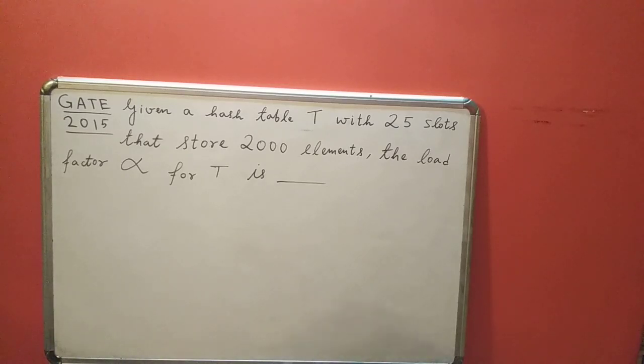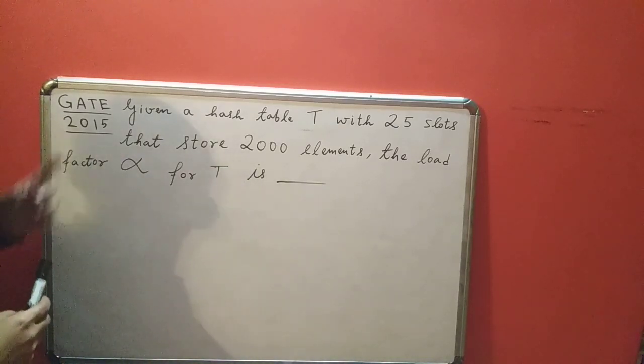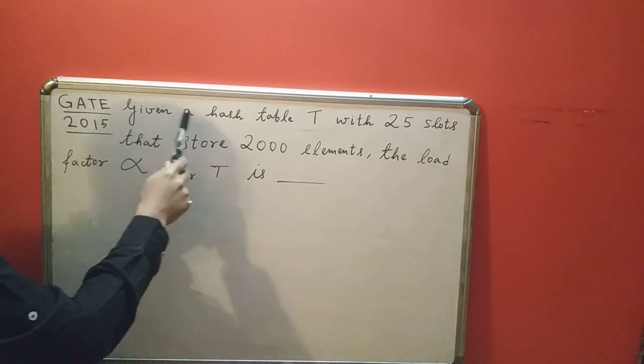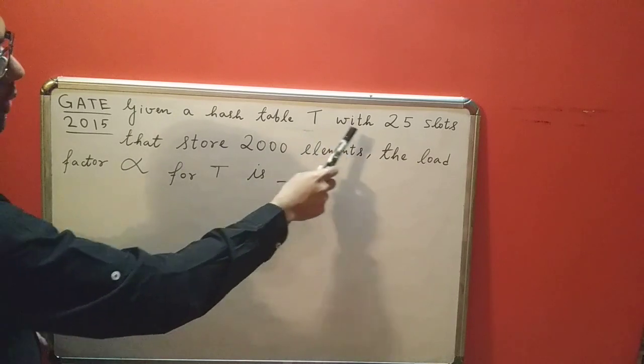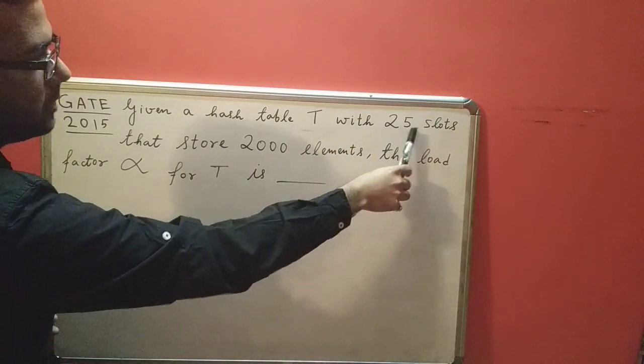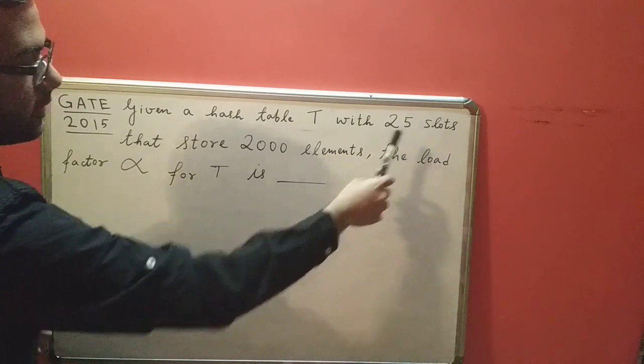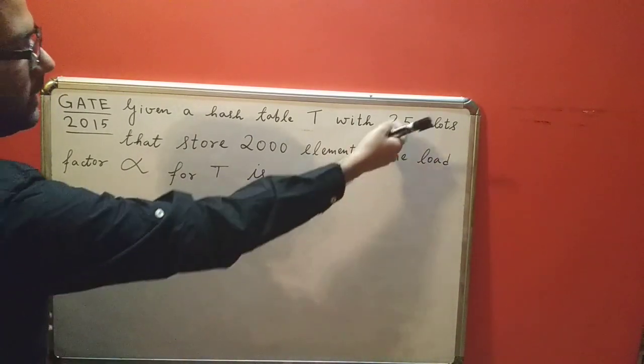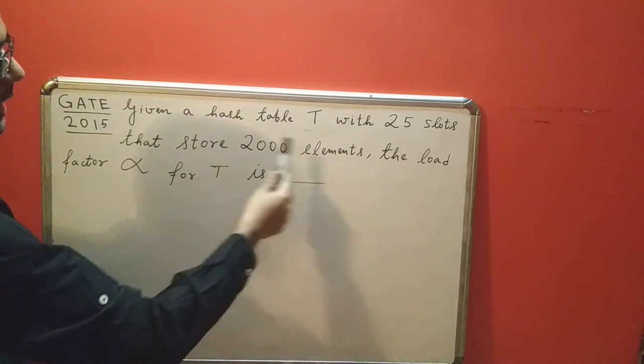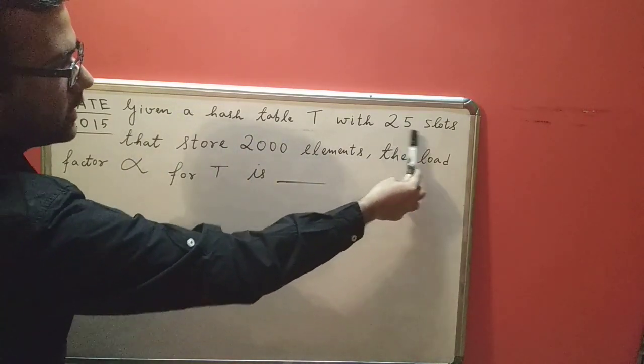Let's solve this question asked in GATE 2015. Given a hash table T with 25 slots, which means the hash table is of size 25, so at a time it can accommodate 25 elements. The table stores 2000 elements. Now you might be wondering that it has 25 slots, so how can it store 2000 elements?